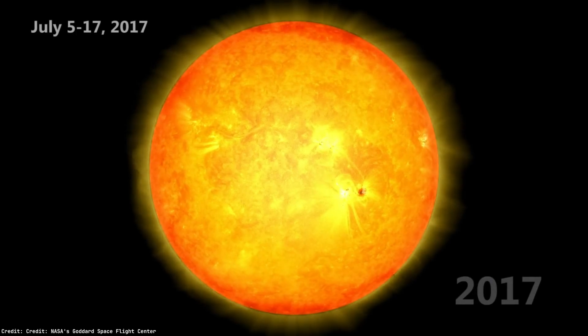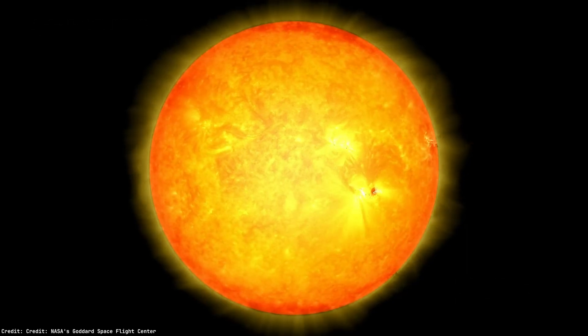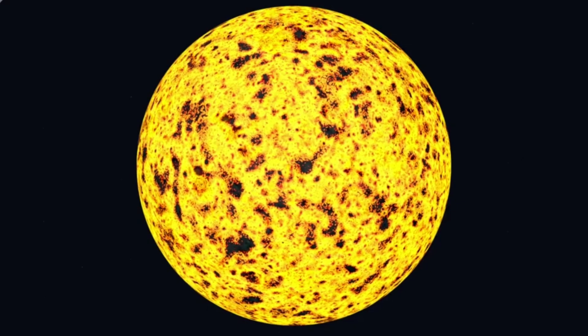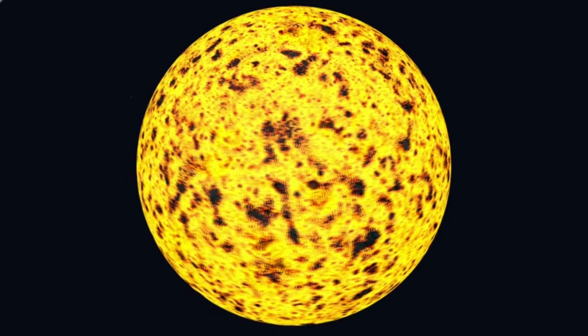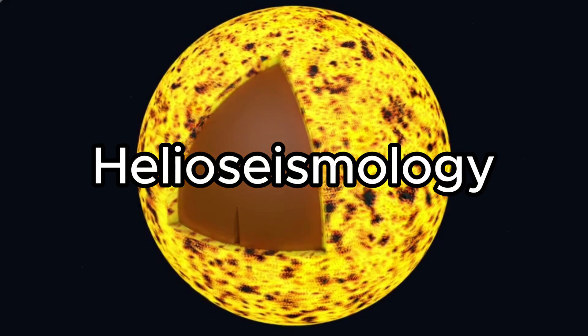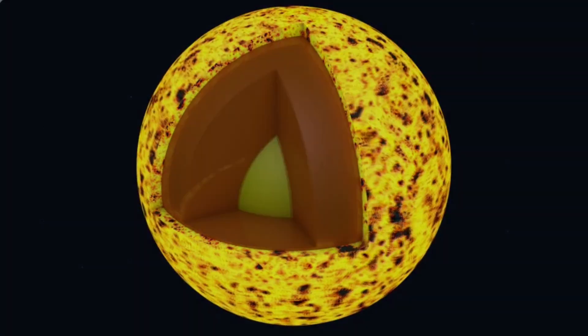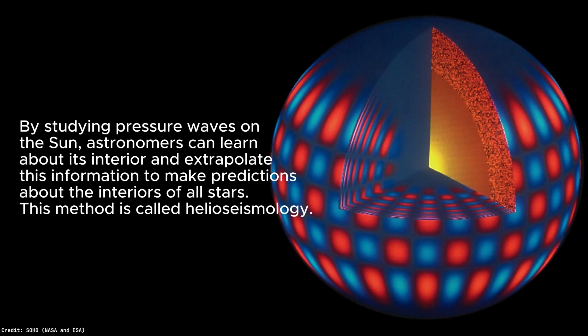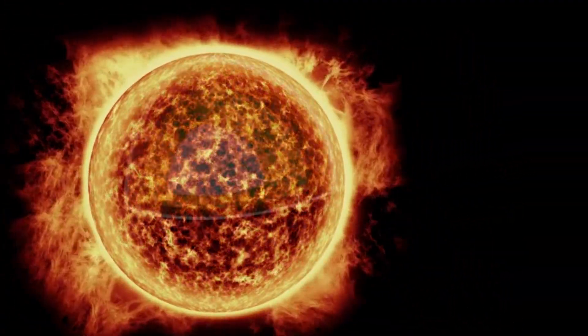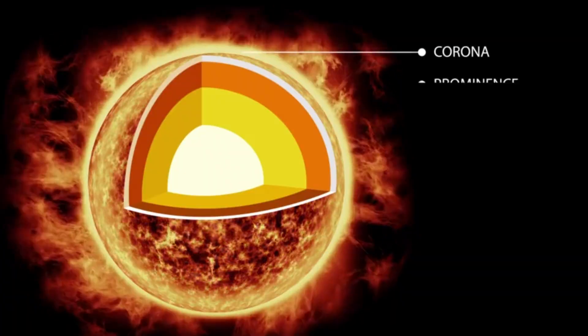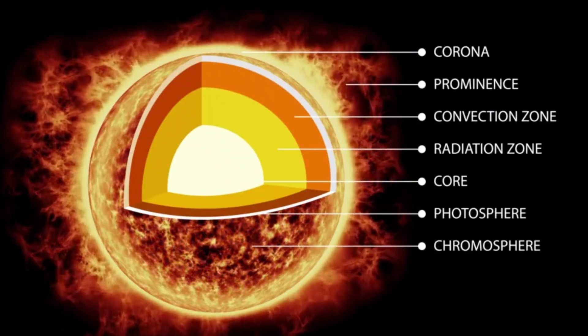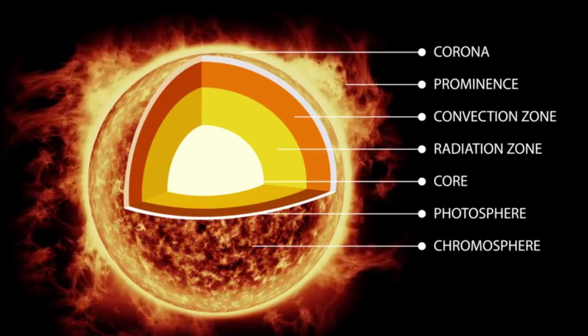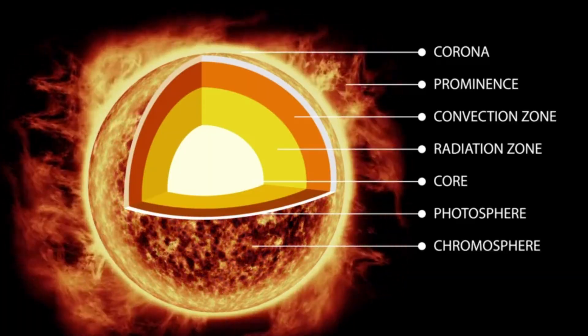We can't exactly look inside the sun. It's a giant ball of plasma, after all. But scientists have found a clever workaround. Helioseismology. It's basically the science of listening to the sun. The sun constantly rumbles with sound waves rippling through its interior. And by studying those waves, scientists can map out what's going on beneath the surface. Think of it like giving the sun an ultrasound, except instead of scanning a baby, we're peering into the heart of a star. It's cosmic eavesdropping at its finest.